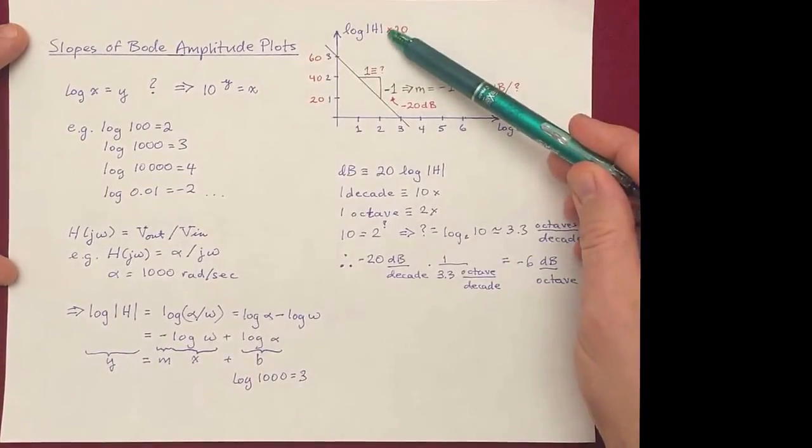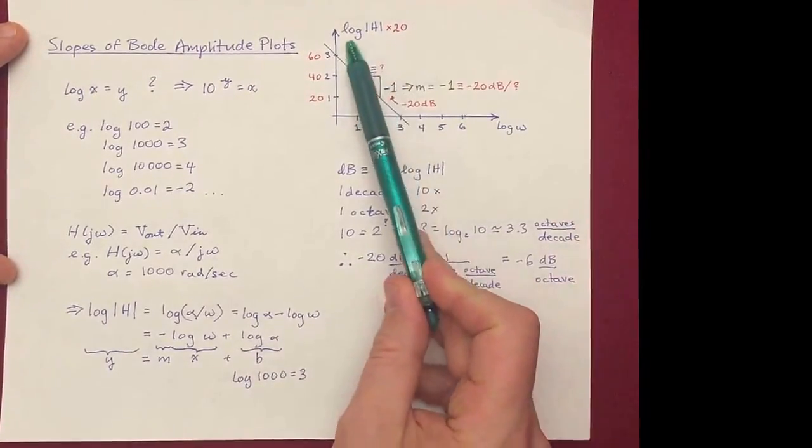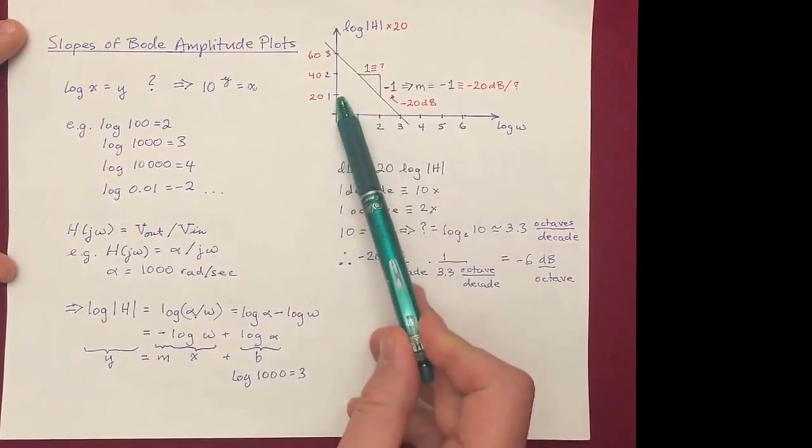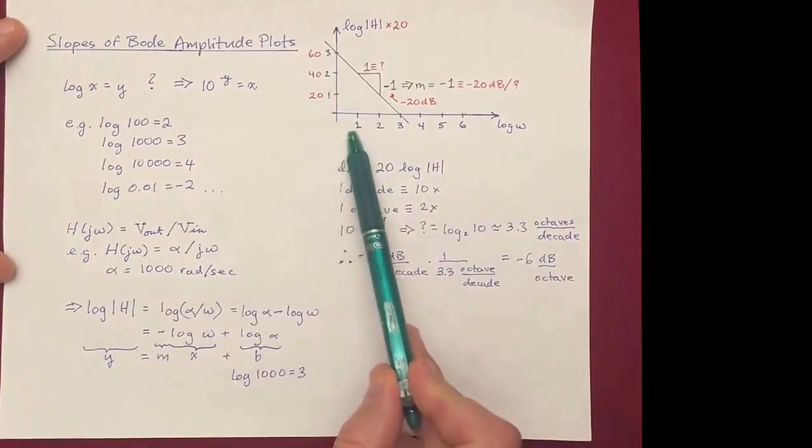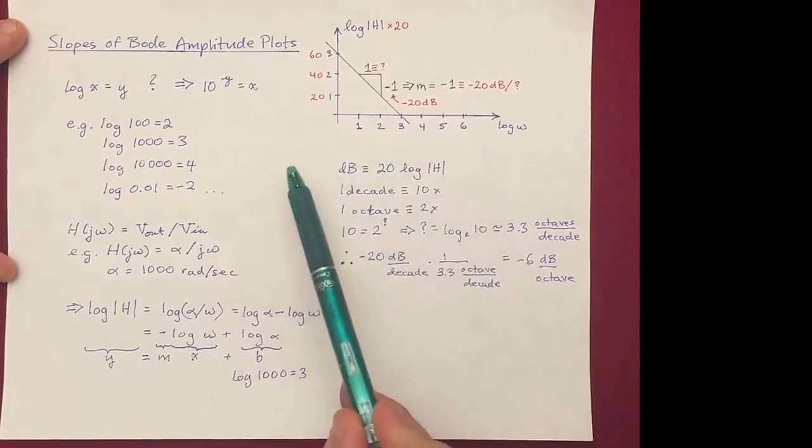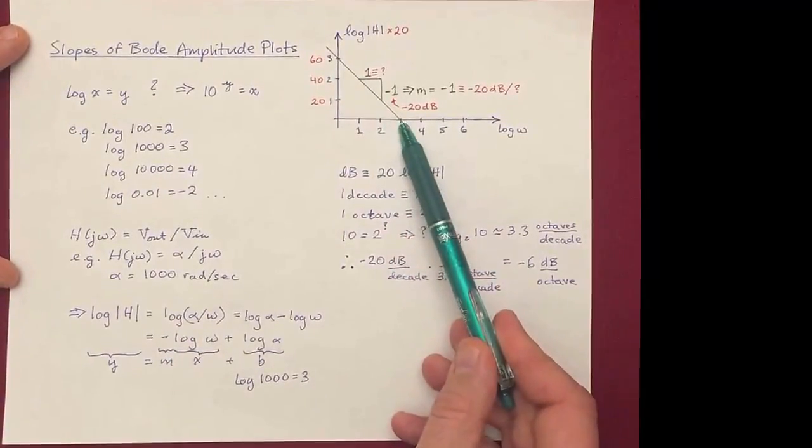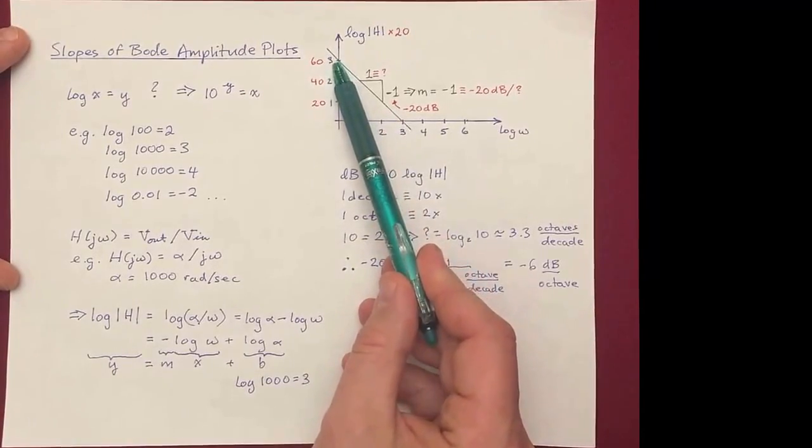So over here, I've plotted that, so ignore the red for now, just look at the blue. The y-axis is log h, the x-axis is log omega, here's the values. As I said, ignore the red for now. And the slope is going to be minus 1, so I've drawn that line with slope of minus 1 and an intercept of 3, just like I said.